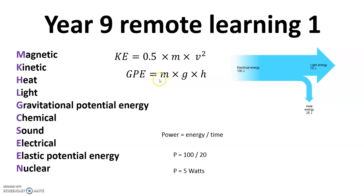We've got our two equations, kinetic energy and gravitational potential energy. 0.5 half times m mass times v squared velocity squared, and GPE, mass times gravity times height.